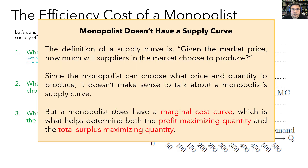As a brief aside, notice that total surplus is maximized when the demand curve intersects the monopolist's marginal cost curve — not the monopolist's supply curve. That's because the monopolist doesn't actually have something we would call a supply curve. A supply curve answers: given the market price, how much would suppliers choose to produce? This question doesn't make sense for a monopolist because it can control both price and quantity. But the monopolist does have a marginal cost curve, and that marginal cost curve helps determine both the profit maximizing quantity and the total surplus maximizing quantity.